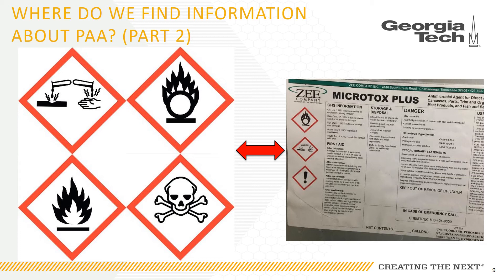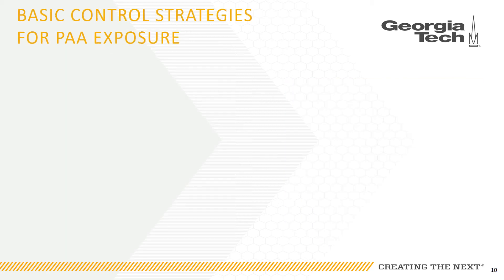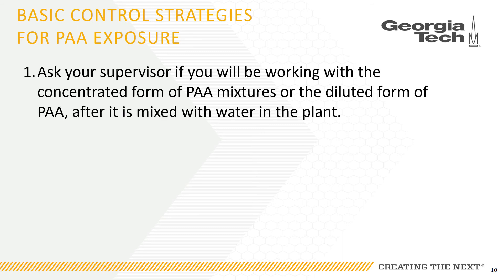If you feel like you need more information about the use of peracetic acid in your plant, make sure to ask your supervisor or the safety and health representative. Most PAA is brought into a plant or facility in a concentrated or undiluted form in either a tanker, tote, barrel, or other type of container. Once inside the facility, water is added to the mixture and the concentration of PAA is reduced. Your supervisor should explain to you how the chemical is brought into the plant and distributed for use and how this relates to your exposures.